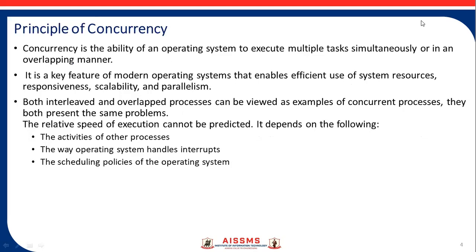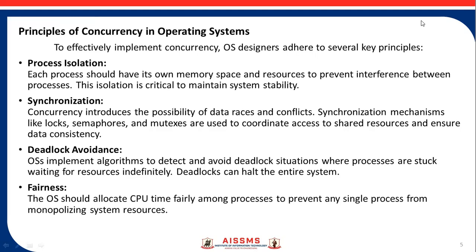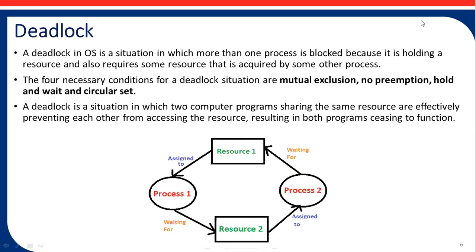These are the principles of concurrency. Concurrency is the ability of an operating system to execute multiple tasks simultaneously or in an overlapping manner. It is a key feature of modern operating systems that enables efficient use of system resources, responsiveness, scalability, and parallelism. Both interleaved and overlapping processes can be viewed as examples of concurrent processes. They both present the same problem: the relative speed of execution cannot be predicted. It depends on the activities of other processes, the way the operating system handles interrupts, and scheduling policies. The key principles OS designers adhere to are process isolation, synchronization, deadlock avoidance, and fairness.